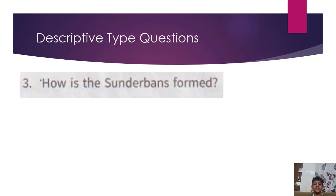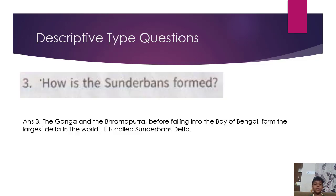How is the Sundarbans formed? Answer: The Ganga and the Brahmaputra, before falling into the Bay of Bengal, form the largest delta in the world. It is called the Sundarbans delta.